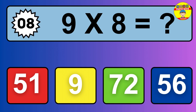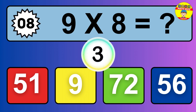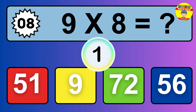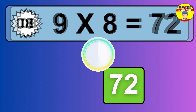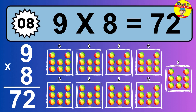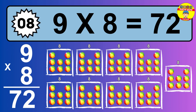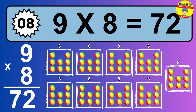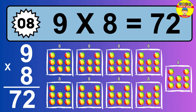Question 8. 9 times 8 equals what? The answer is 9 times 8 is 72. To calculate, we have 9 groups with 8 balls each one. So how many balls do we have? 72 balls.